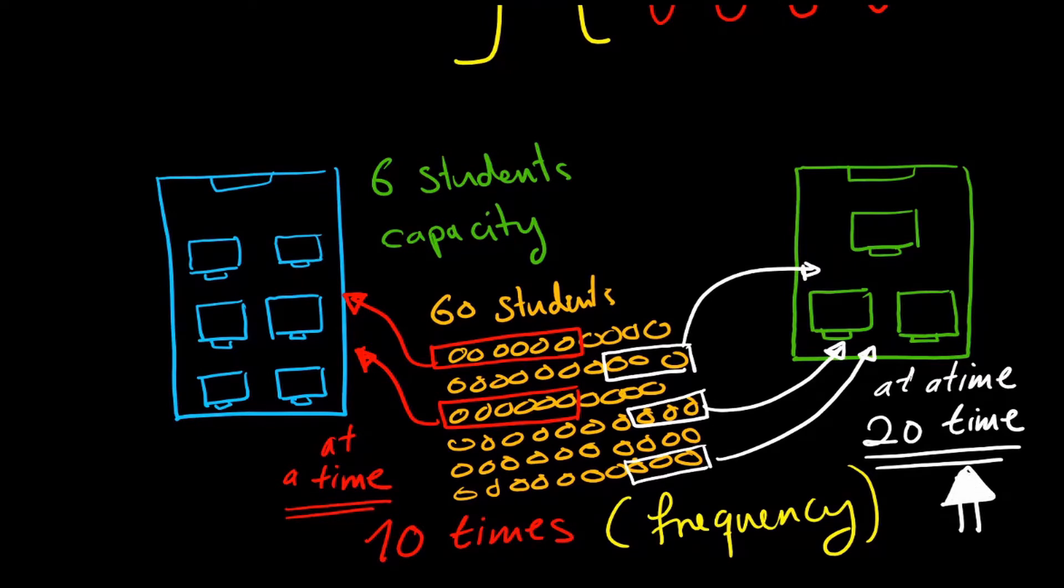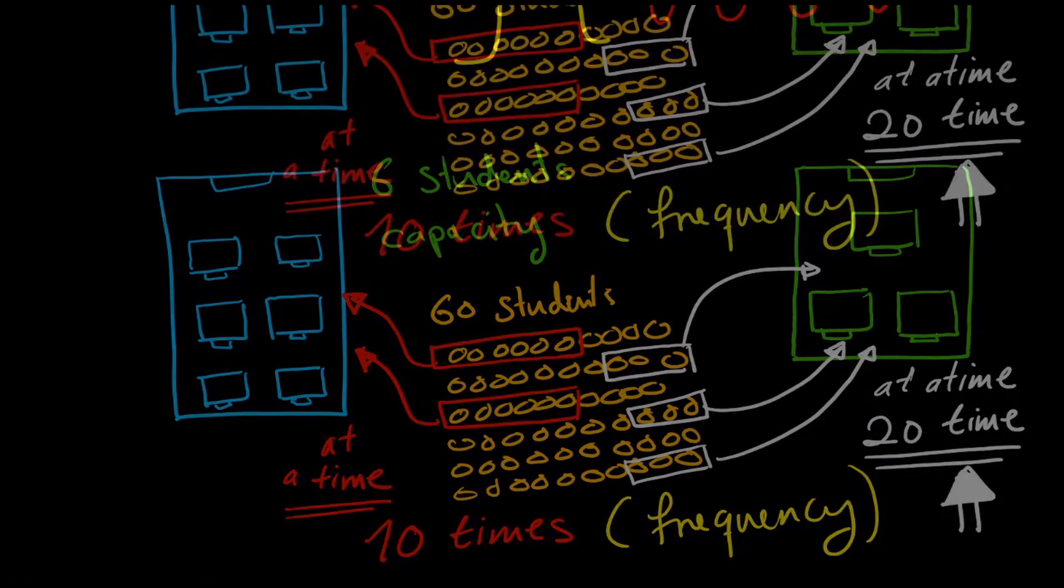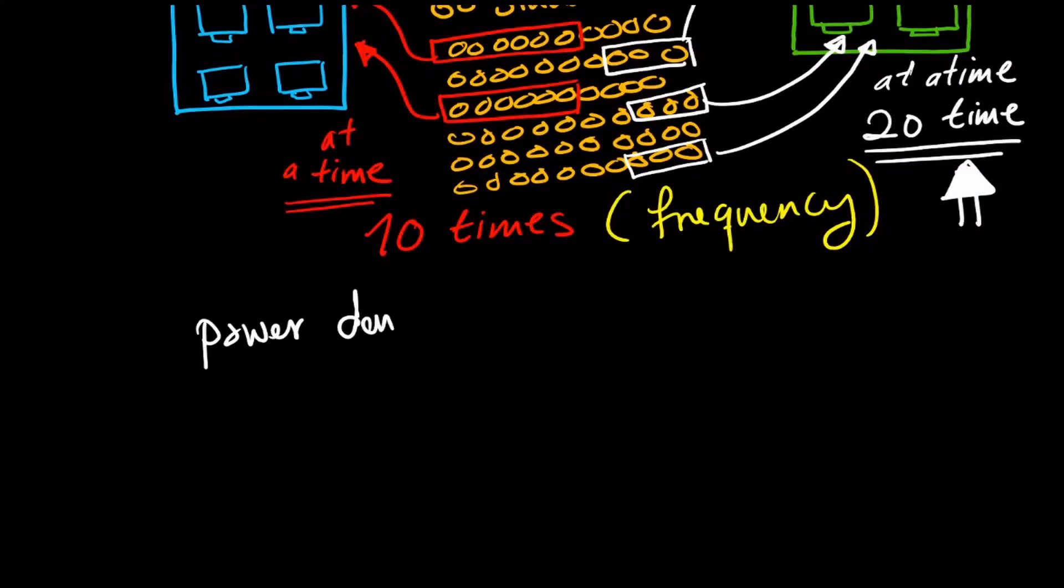We reflect this example to many things, and one of the things is the density of power electronics converters. The density of power converter is measured by kilowatt per cubic meter.